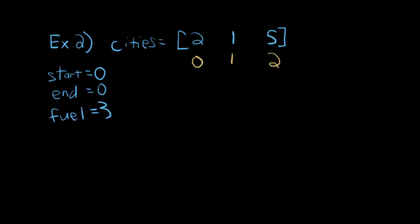In this next example, the cities are 2, 1, and 5, and I've again written the index below each city. Our starting and ending point are both index 0, and we have 3 units of fuel. So what are the possible ways we can do it here? I'll write down the path and how much fuel it uses to do that path. One way to do this is just to do 0. If I start and end at 0, I got to where I wanted to go starting where I need to start from, and I've used 0 gas, 0 fuel to do that.